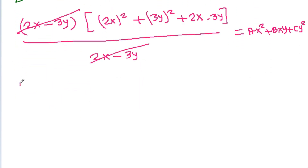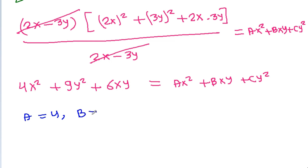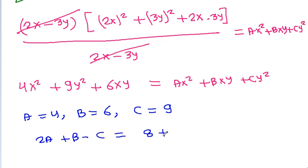So we get 4x² + 9y² + 6xy = ax² + bxy + cy², giving a = 4, b = 6, and c = 9. Therefore, 2a + b - c = 8 + 6 - 9 = 5.